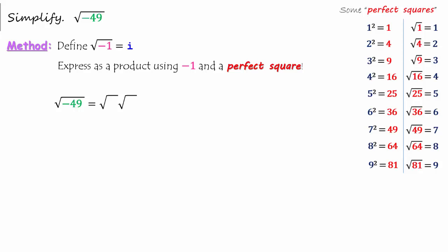The idea is to express negative 49 as a product using negative 1 and one of these perfect squares. We can do that using positive 49 and negative 1 since positive 49 times negative 1 is equal to negative 49.